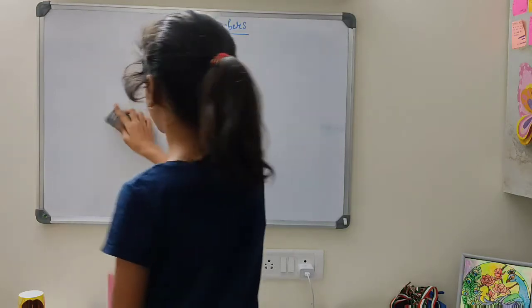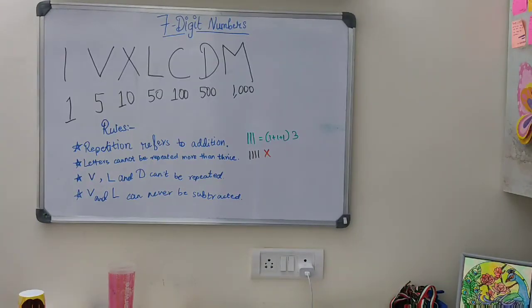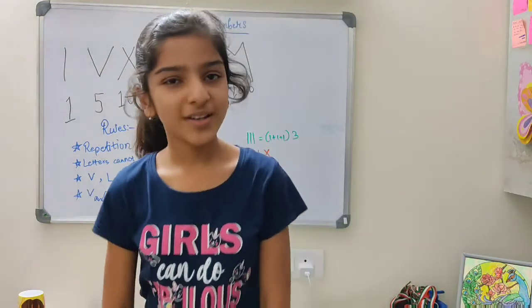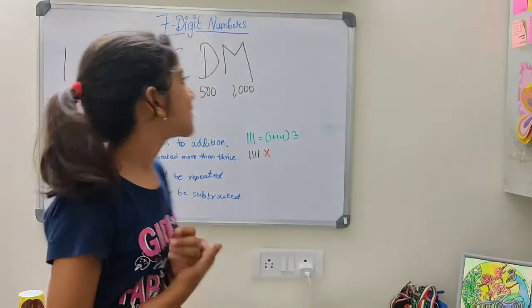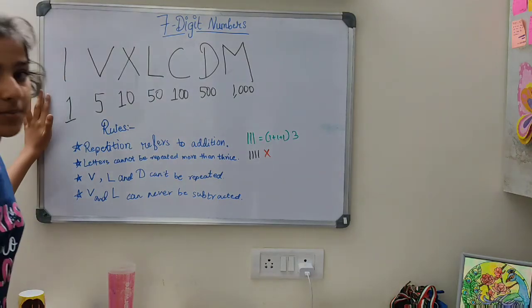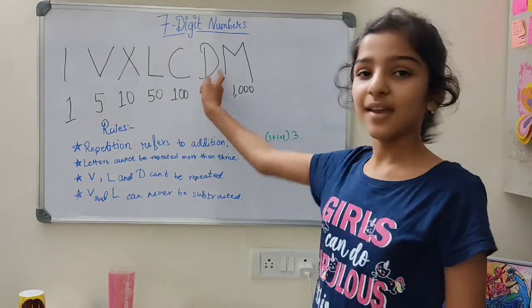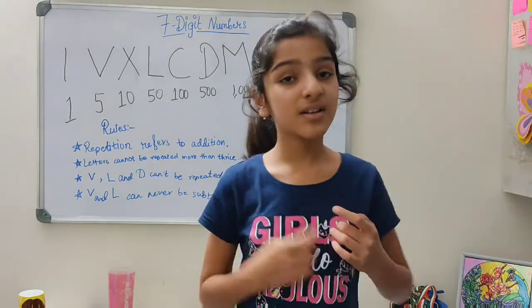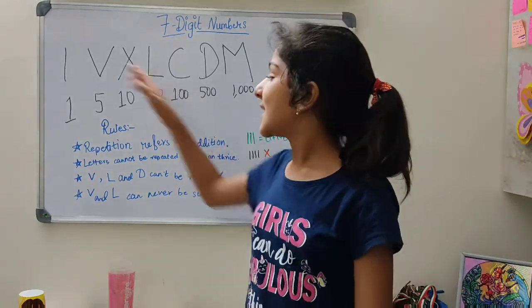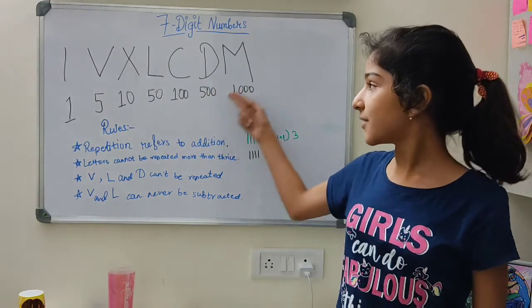The last topic we are going to learn in today's class is Roman numerals. Roman numerals consist of 7 letters through which we can form numbers. The 7 letters are I, V, X, L, C, D, and M. Each letter has a different value: I = 1, V = 5, X = 10, L = 50, C = 100, D = 500, and M = 1000. It's very important to know the values of these letters.